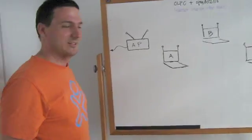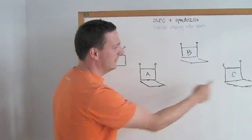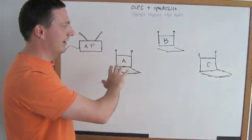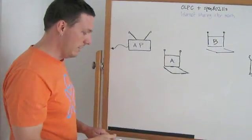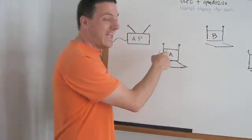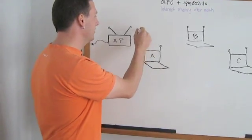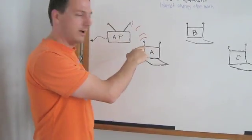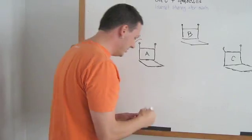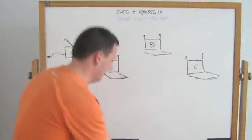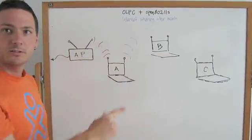Let me describe what we're going to do. A, B, and C in this diagram are XOs, and we have an access point here that's our office access point. The first thing we're going to do is turn A into a mesh router, and that's going to cause A to associate with our office access point so it can access the internet. It's also going to start a mesh network that the other XOs can talk to.